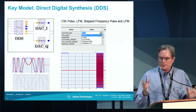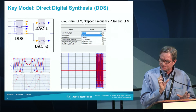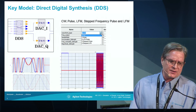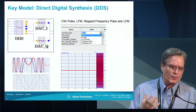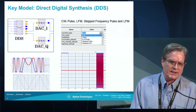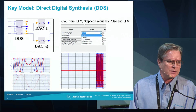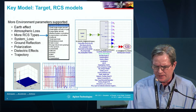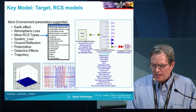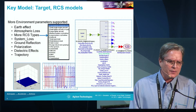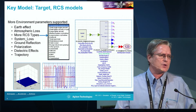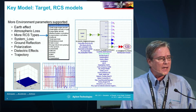In the past, users in the RF world may have used a scanning oscillator. Some of the key models here include a direct digital synthesizer. With the radar, we want to generate a certain type of pulse, and with our DDS model you can select from the types of signals and pulses that are commonly generated. Another important model is the radar cross section — there are lots of different types of radar cross sections available by default. We can also look at ground effects, atmospheric losses, system losses, ground reflection, and polarization.